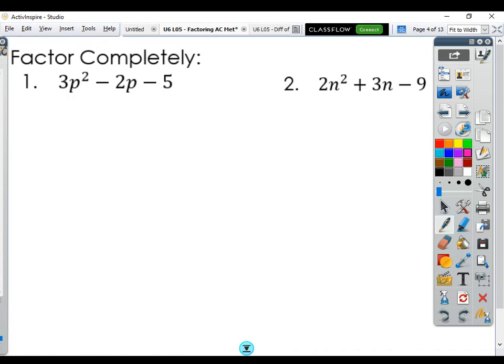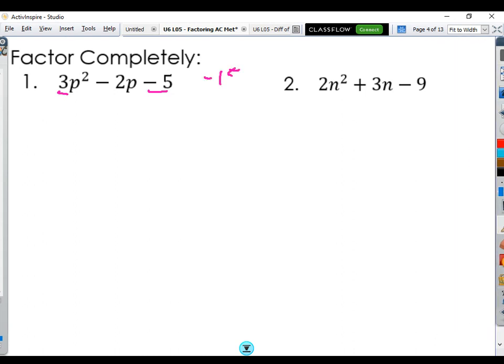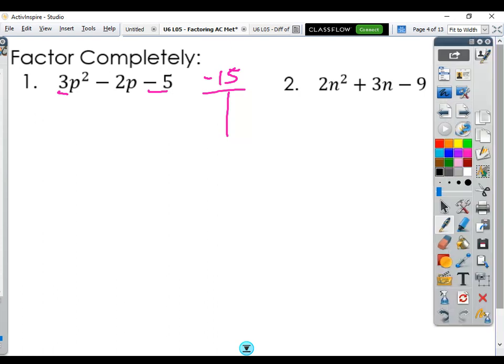So I'm going to start us off by doing A times C. So in this case, that's 3 times negative 5. And I just like to do it right here after the side, draw my T chart. So AC, 3 times negative 5 is negative 15. And then we put that on top of our T chart.